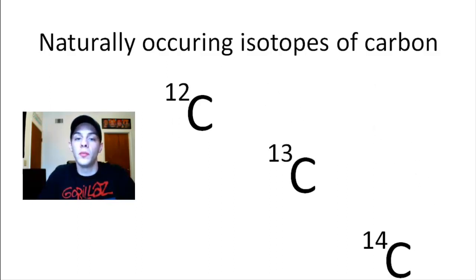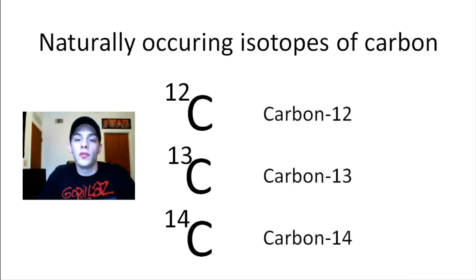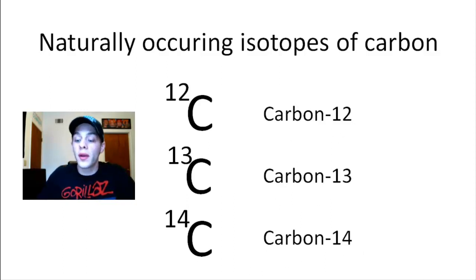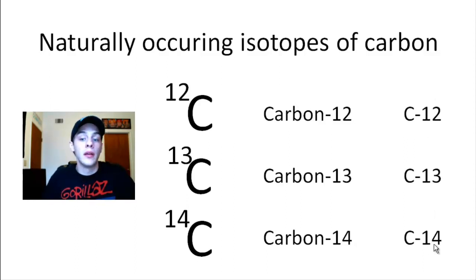That is one notation you can use, but there are also a couple of different ways to represent this. Another way is to have the name of the element followed by the mass number separated by a hyphen: carbon-12, carbon-13, carbon-14. Yet another way is to have the chemical symbol and the mass number separated by a hyphen: C-12, C-13, C-14. These are just three different ways of saying the exact same thing.